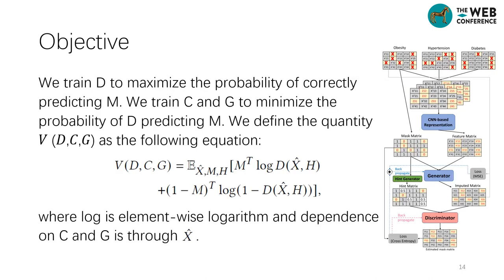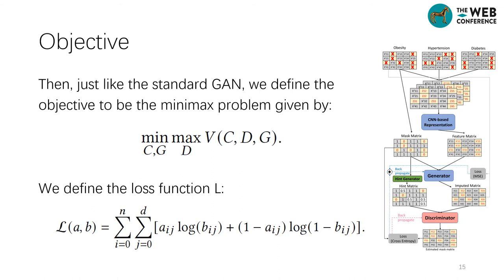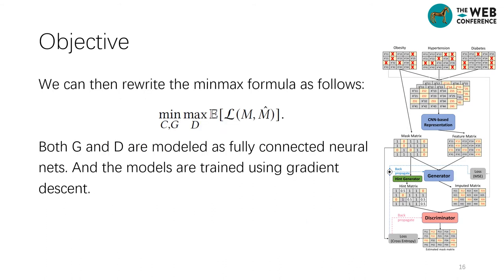We train the discriminator to maximize the probability of correctly predicting M. We train the CNN and generator to minimize the probability of the discriminator predicting M. We define the objective quantitatively as the following equation. Then, just like the standard GAN, we define the objective as the min-max problem given by this equation. We then define the loss function L, and rewrite the min-max formula accordingly. Both the generator and discriminator are modeled as fully connected neural networks, and the models are trained using gradient descent.